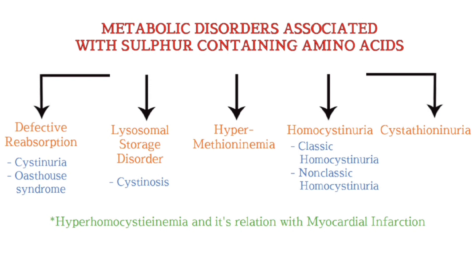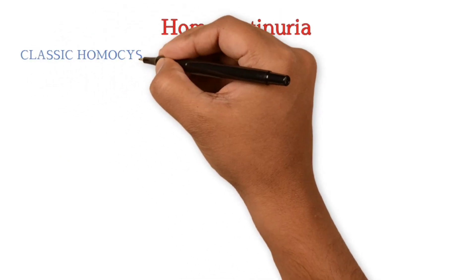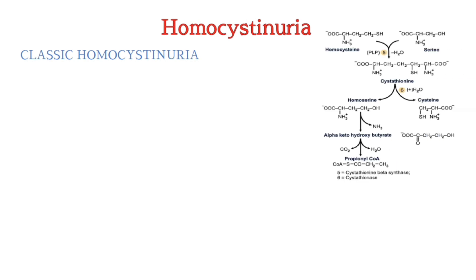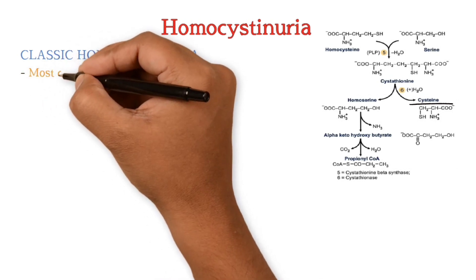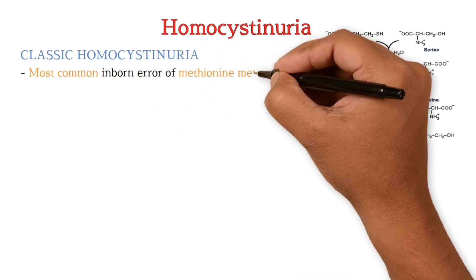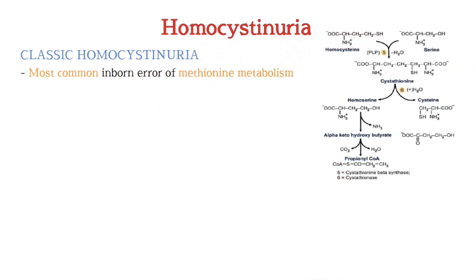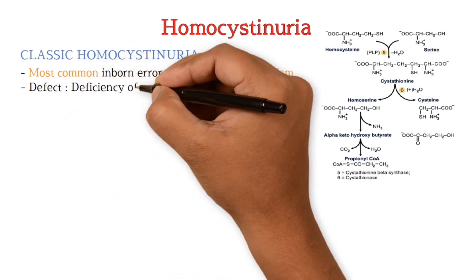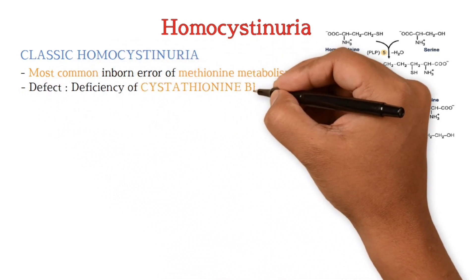In this video, homocystinuria is explained. First is classical homocystinuria. Here is the pathway where homocysteine and serine are converted into cysteine and propionyl-CoA. Classical homocystinuria is the most common inborn error of metabolism of methionine. The basic defect is deficiency of the enzyme cystathionine beta-synthase.